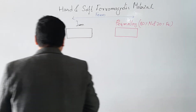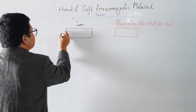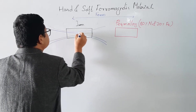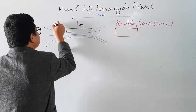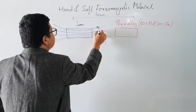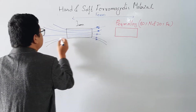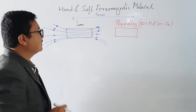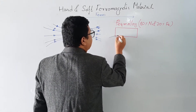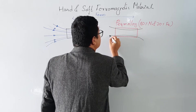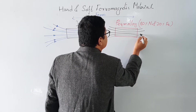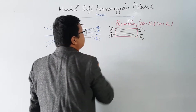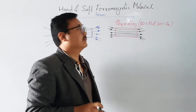Whenever we put a magnetic field, what happens is that the magnetic field lines will pass through the ferromagnetic material. The diagram I am making here may differ slightly from the diagram in the previous lecture on ferromagnetism. Similarly, if I apply a magnetic field to Permalloy — which is made from eighty percent nickel and twenty percent iron — the magnetic field will pass through it as well.